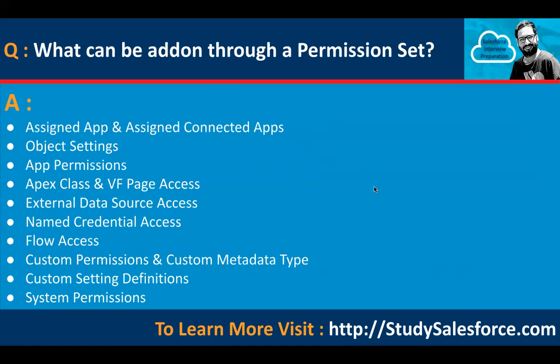What can be added through a permission set? Assigned apps and connected apps, object settings, app permissions, Apex class and Visualforce page access, external data source access, named credential access, flow access, custom permissions, custom metadata type, custom settings definitions, and system permissions. Users can have only one profile but can have multiple permission sets assigned.